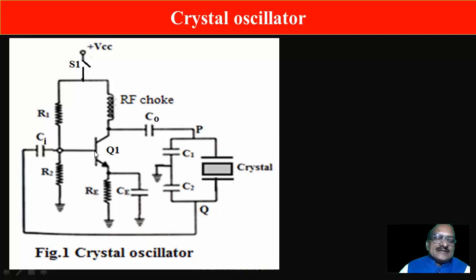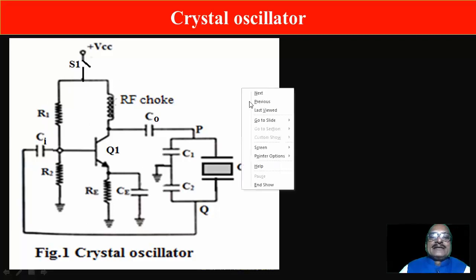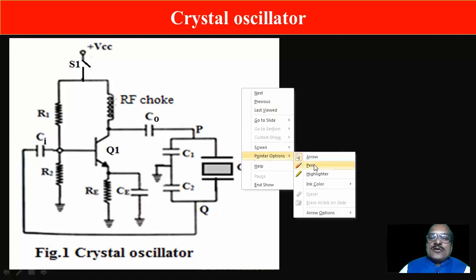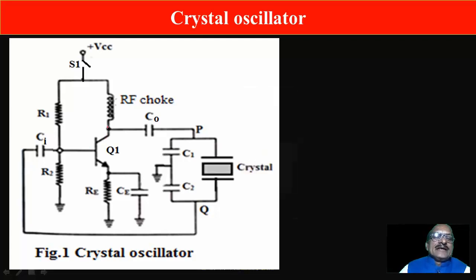Then this single stage transistor amplifier will amplify those small voltages that appear at the collector of the transistor, and then that energy is used to again charge the capacitor C1 and C2.